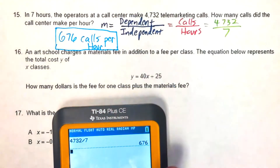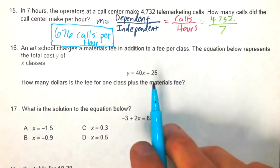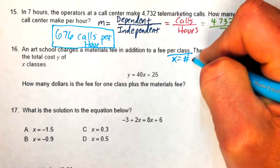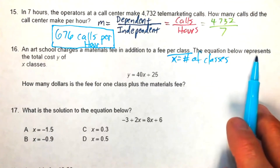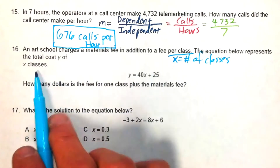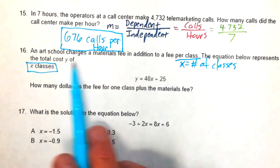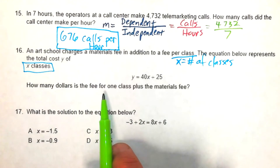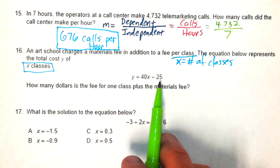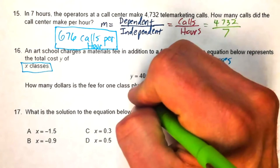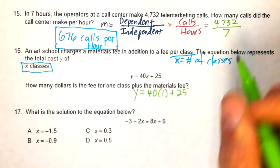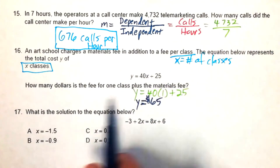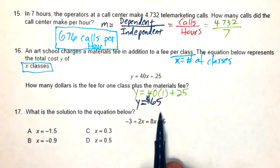Problem sixteen: an art school charges a $25 materials fee plus $40 per class. The equation is y = 40x + 25. For one class, substitute x = 1: y = 40(1) + 25 = 65. The total cost for one class, including the materials fee, is $65.